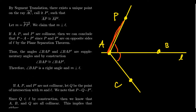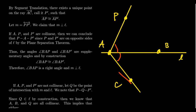By segment translation, we can take segment AP and translate it onto ray AC to get a point C prime such that AP is congruent to AC prime. Without loss of generality, we can assume that point was C in the first place, since C just gives us the direction of the ray. We rename this point P prime, so that AP prime is congruent to AP, and angle BAP is congruent to angle BAP prime.